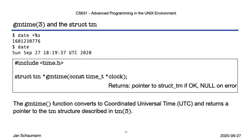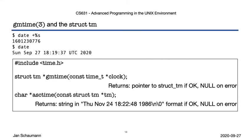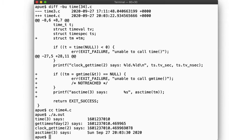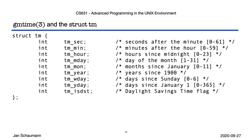We know how to break down a time_t into a struct tm, but we still haven't seen how we can format this struct tm into a convenient date string. For that we have the asctime function, which takes a struct tm and formats it into a readable string. So we can extend our program from before and finally get the output of the timestamp formatted in a human-readable date.